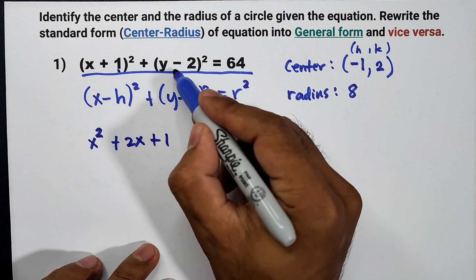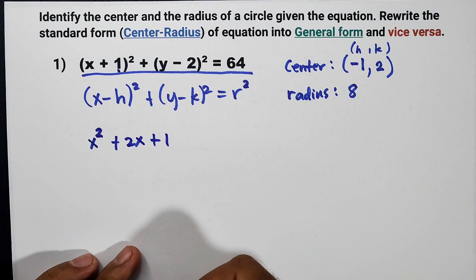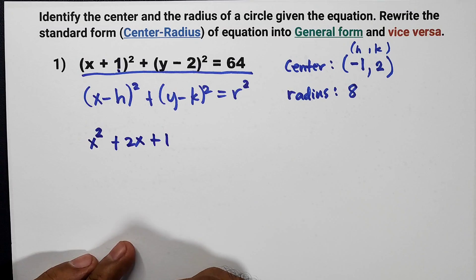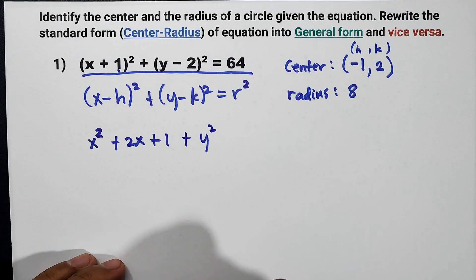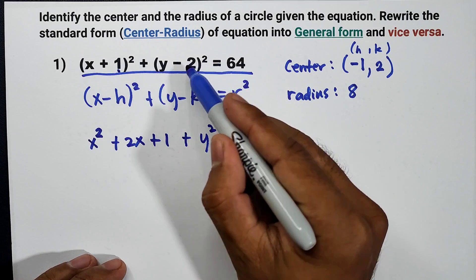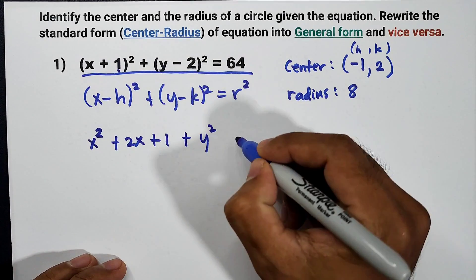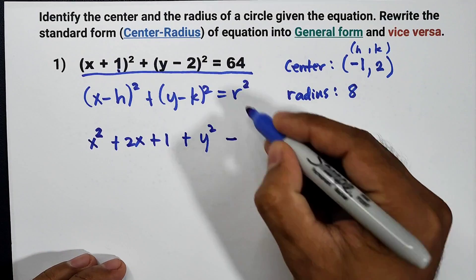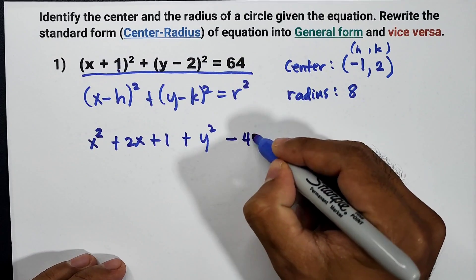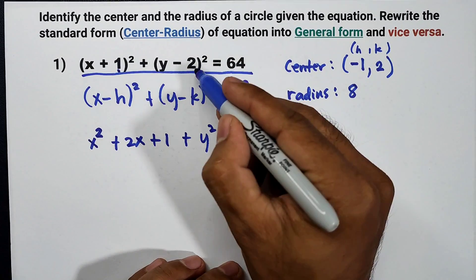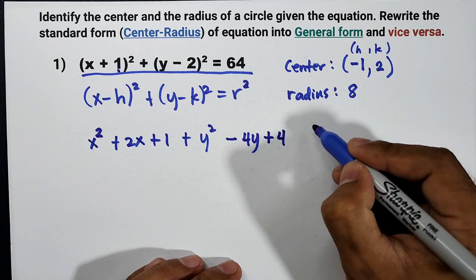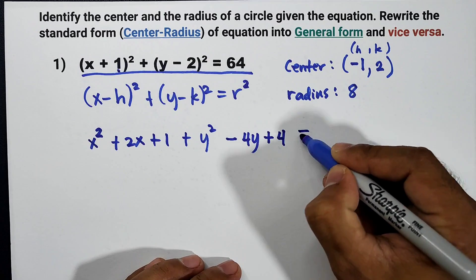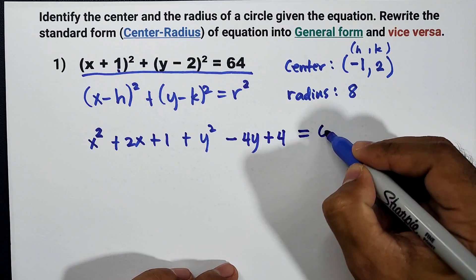Next, square y minus 2: square the first term, that is y squared. Then twice the product of y and negative 2, so that is negative 4y. Then square of negative 2, that is positive 4. And this is equal to 64.